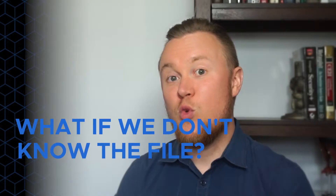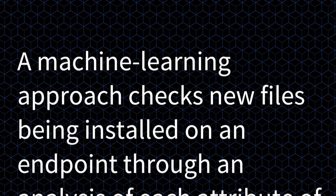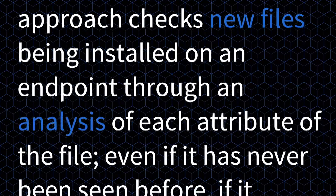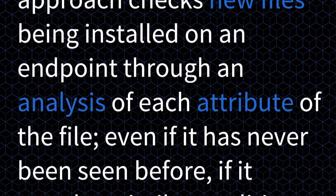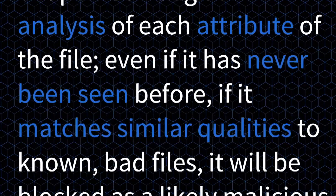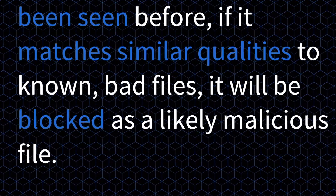Unfortunately, this approach has a number of flaws owing to the current landscape. What if we don't know the file? This actually brings us to our second approach: machine learning. Now in some cases you may hear this referred to as artificial intelligence, but the premise is basically the same. A machine learning approach checks new files being installed on an endpoint through an analysis of each attribute of the file. Even if it has never been seen before, if it matches similar qualities to known bad files, it will be blocked as a likely malicious file.